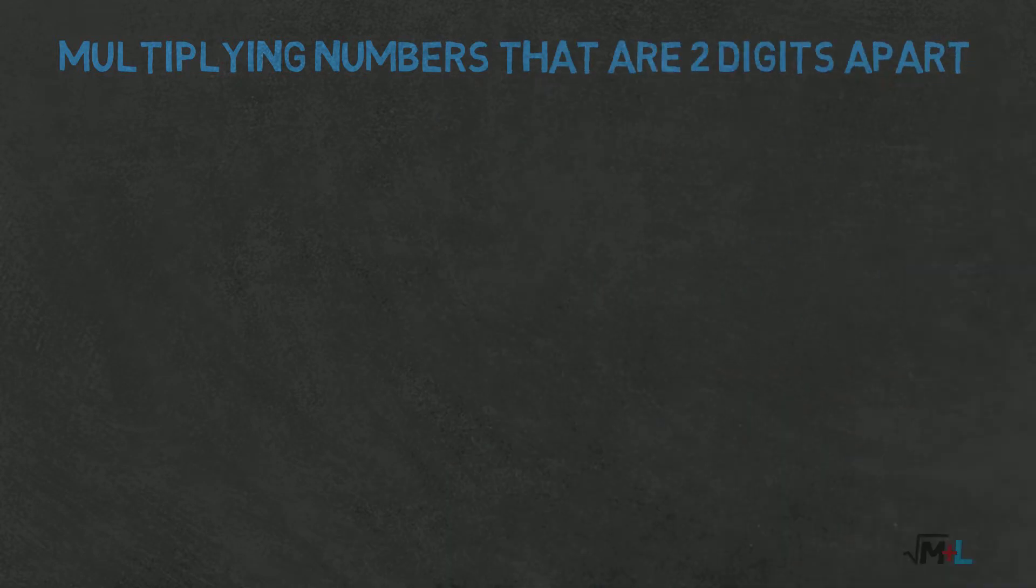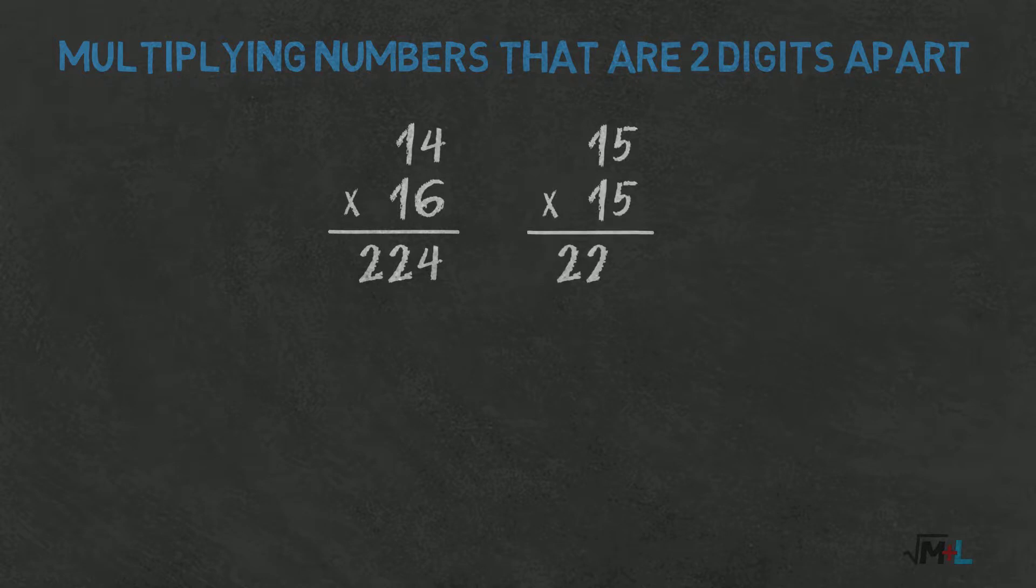We multiply two numbers that are just two digits apart, let's say 14 and 16. The result of multiplication is 224. But between those numbers there is 15. What is 15 squared? 225. So just one more than 14 times 16.